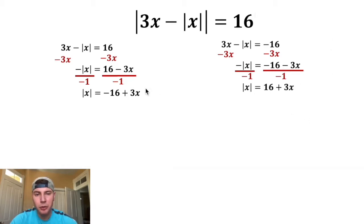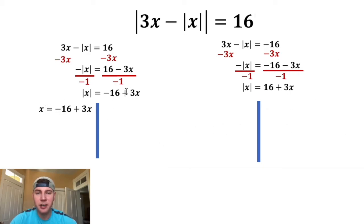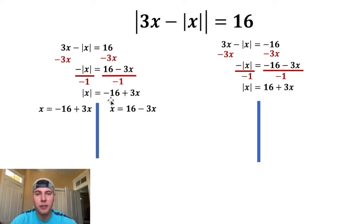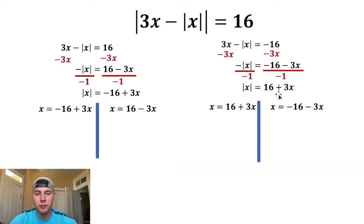Now we split each of these two equations into two more equations. From the first, x equals negative 16 plus 3x, and x equals positive 16 minus 3x. From the second, x equals 16 plus 3x, and x equals negative 16 minus 3x. This gives us four equations to solve.